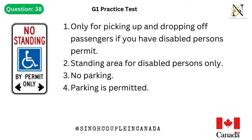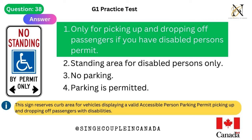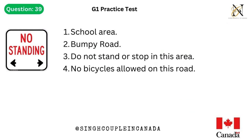Question 38. This traffic sign means: 1. Only for picking up and dropping off passengers if you have a disabled persons permit. 2. Standing area for disabled persons only. 3. No parking. 4. Parking is permitted. Answer is 1. Only for picking up and dropping off passengers if you have a disabled persons permit. This sign reserves curb area for vehicles displaying a valid accessible person parking permit picking up and dropping off passengers with disabilities.